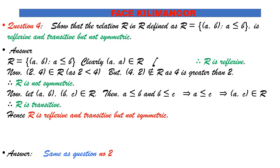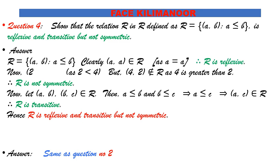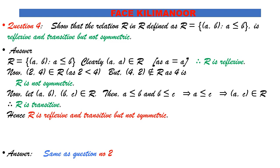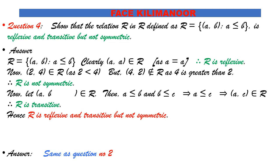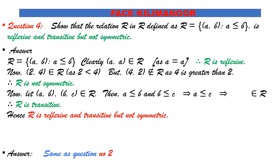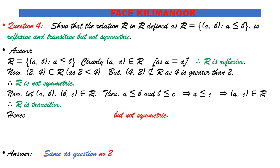Clearly, for a ≤ a, (a,a) belongs to R. So the relation is reflexive. For example, (2,4) belongs to R, but (4,2) does not belong to R because the inequality does not hold. Therefore R is not symmetric. If (a,b) and (b,c) belong to R, then a ≤ b and b ≤ c, which implies a ≤ c.